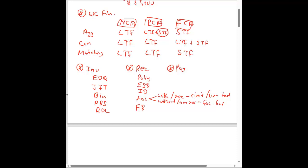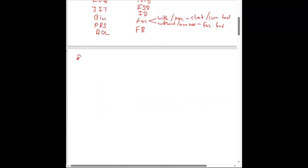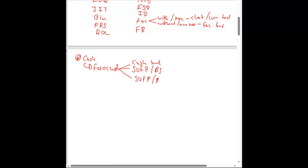Foreign payable and receivable management is mostly covered in Section G on risk management. For cash management, the best approach is having a proper cash forecast. You can forecast cash by preparing a cash budget, or using the statement of financial position (balance sheet), or using the balance sheet combined with the working capital ratio.